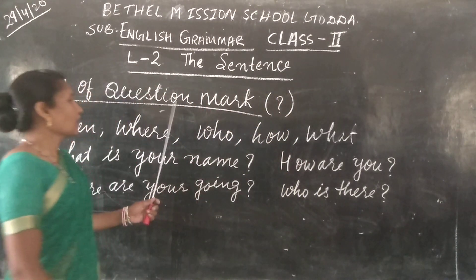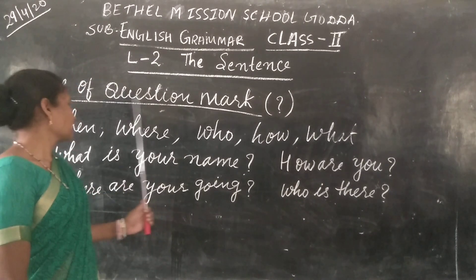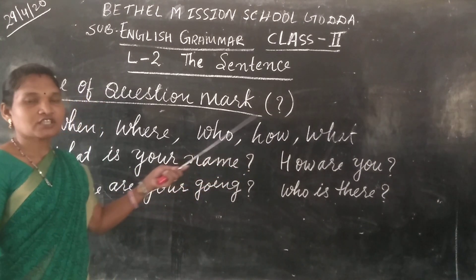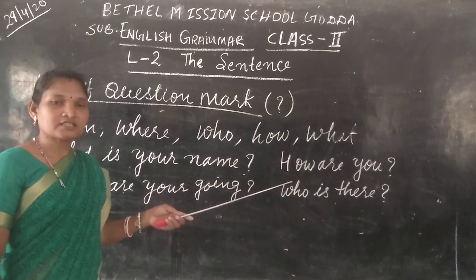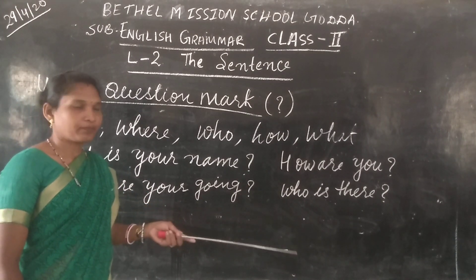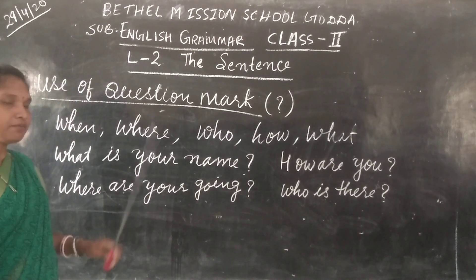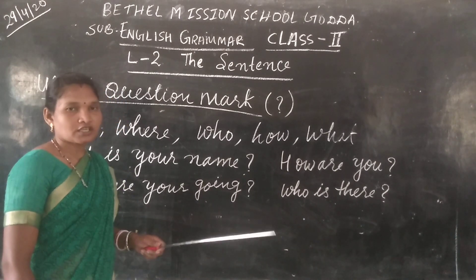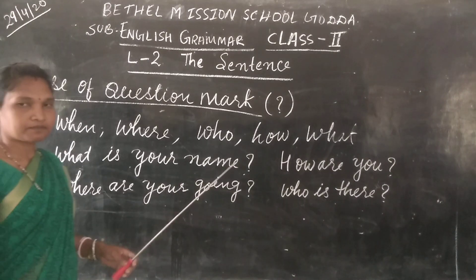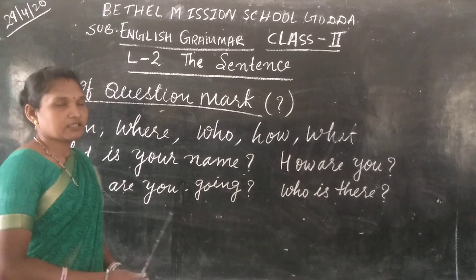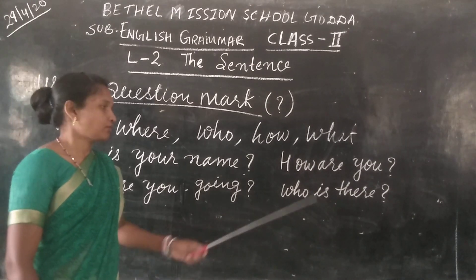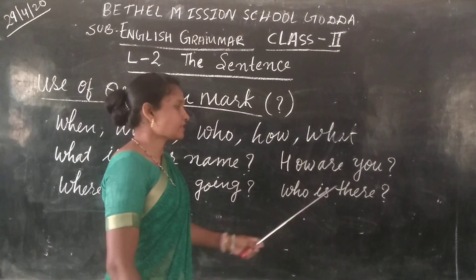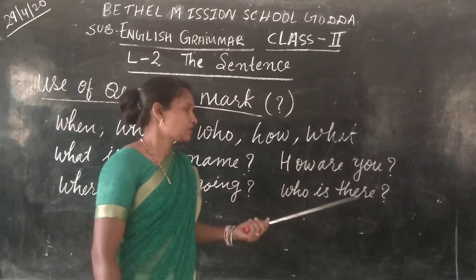Now here you are seeing which words make questions — like when, where, who, how, what. Whenever you see these words in a sentence, that means that sentence is in question form. Now you see here: What is your name? — that is in question form, so you put the question mark. The next is: Where are you going? — this is also in question form. Then: How are you? — in question form. Who is there? — also in question form.